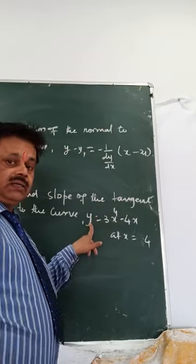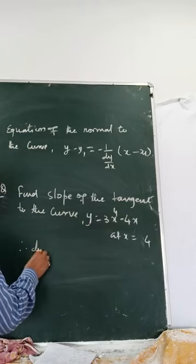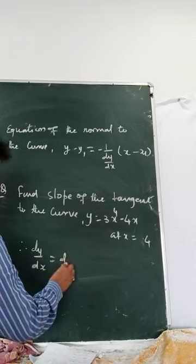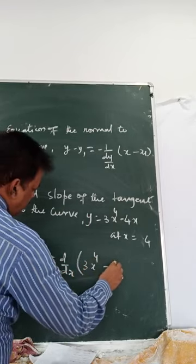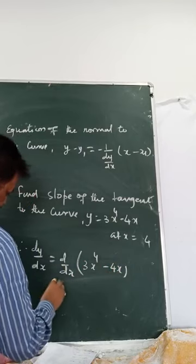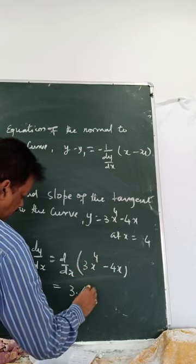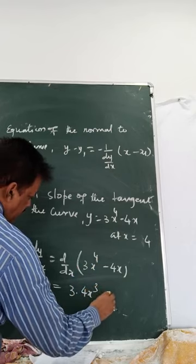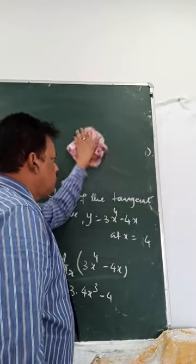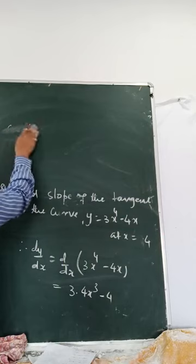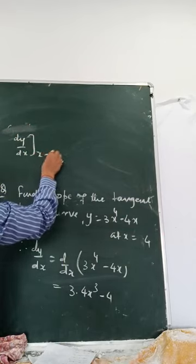Slope of the tangent means you need to find dy by dx. Therefore, dy by dx is d/dx of 3x to the power 4 minus 4x, which gives 12x cubed minus 4. Then slope of the tangent means you need to find dy by dx when the value of x is 4.